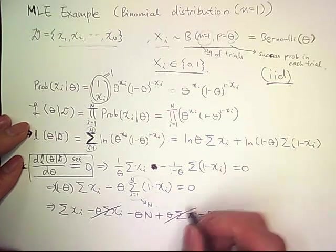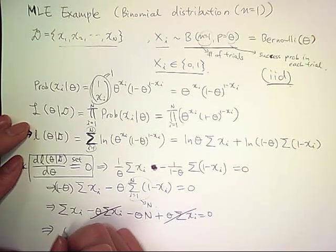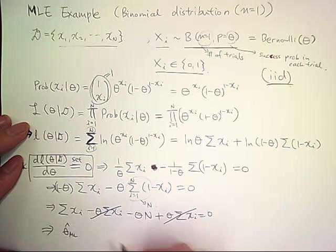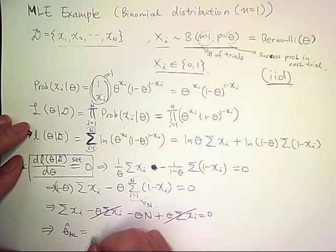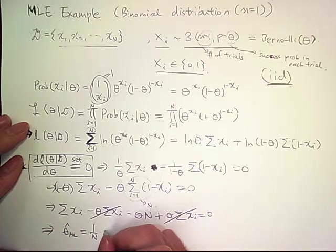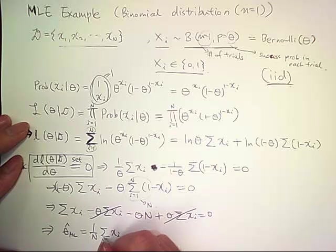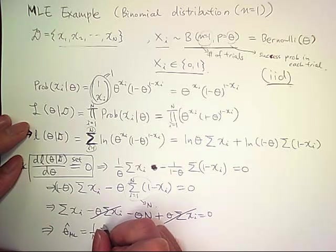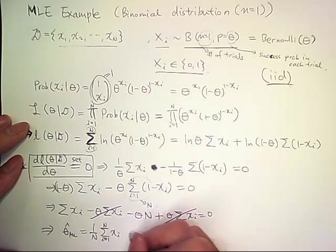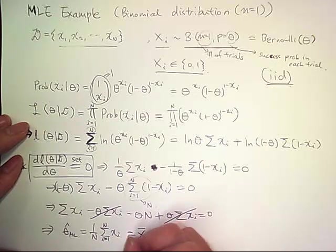These two cancel out. Finally, we get maximum likelihood estimate of theta equals 1 over n times sum of x sub i summing over 1 to n. So this is a sample mean.